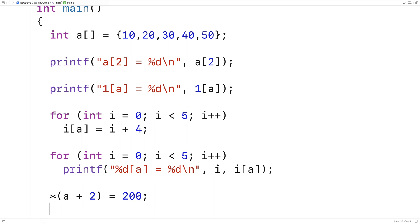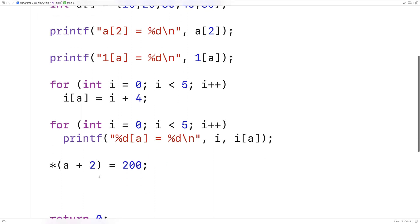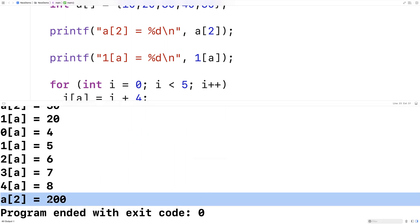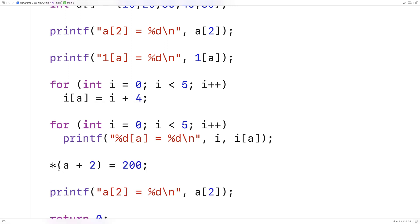So the pointer notation works like this: we would say star a plus 2 is equal to maybe we'll say 200, and what we've done here is set the array a at index 2 equal to 200. And we could print that out just to verify it, so we could say printf a at index 2 is equal to percent d slash n, and we'll output a at index 2, and we should get 200 there, and we do.